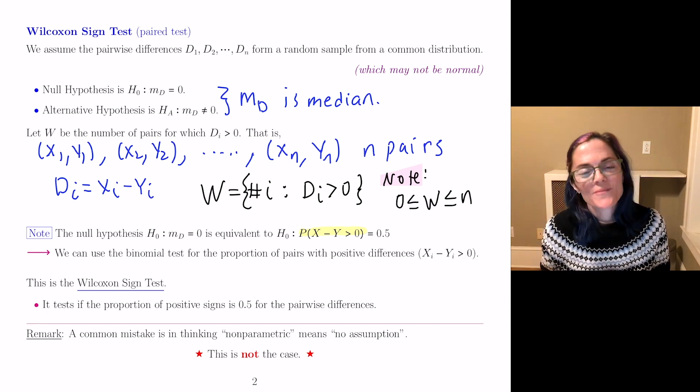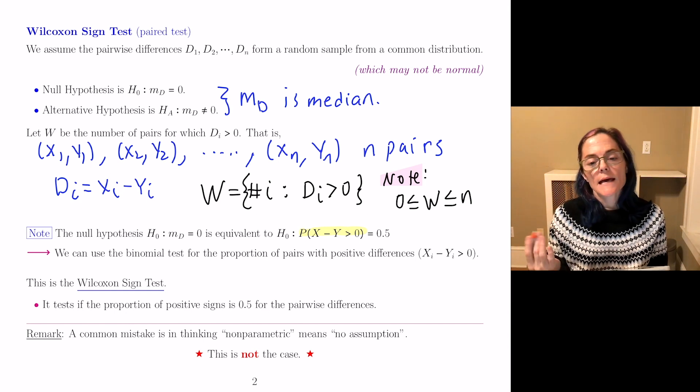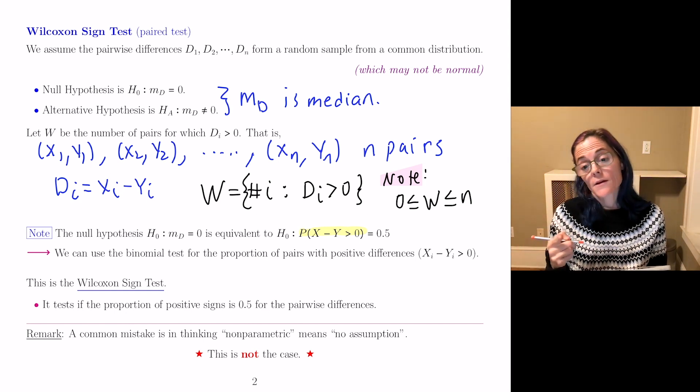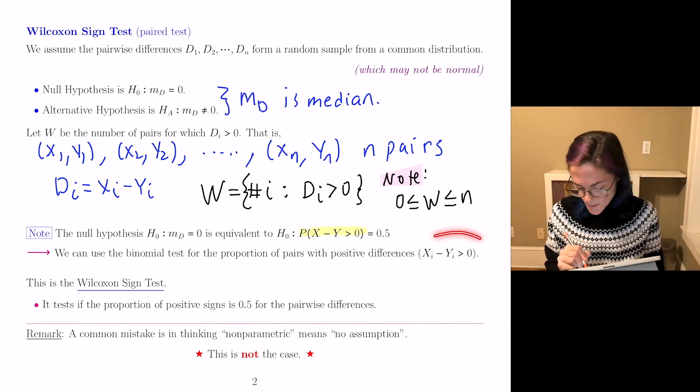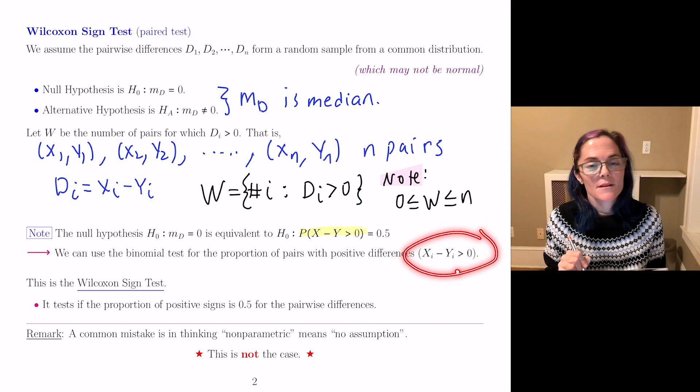And so we can use the binomial test for the proportion of pairs with positive differences. And that just means that Xi minus Yi is greater than zero.